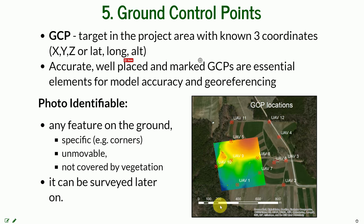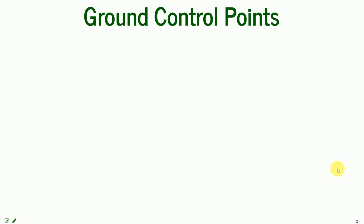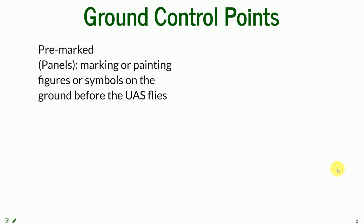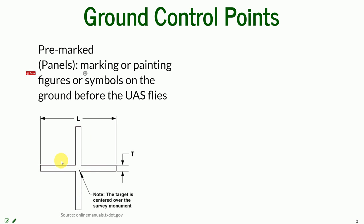Here is our test site, where you can see the digital surface model and the location of our ground control points. We use pre-marked panels — marking and paving figures or symbols on the ground that are placed before the UAS flies. They are usually in the shape of a cross so that the center can be easily recognized on the photos. The target is centered over the survey monument if you are taking multiple missions, or you can measure it each time before the UAS mission.